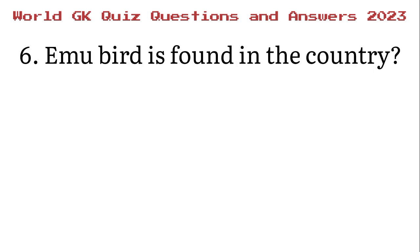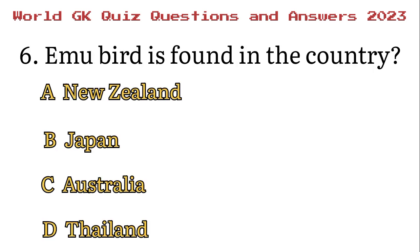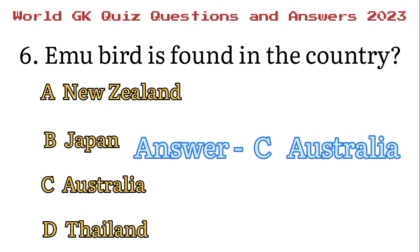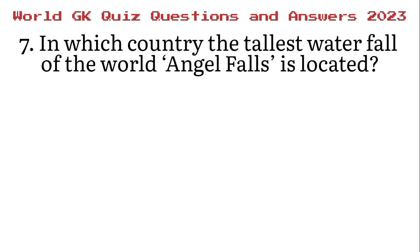Number 6. The Emu is found in which country? A. New Zealand, B. Japan, C. Australia, D. Thailand. The answer is C. Australia.